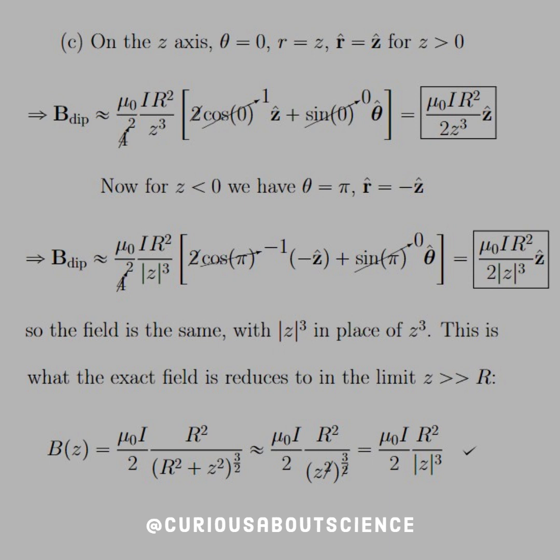Conversely for z less than 0 we have theta equal to pi and R hat equal to negative z hat. So we also know that z will be negative in this region clearly because z is less than 0 so we just put a magnitude sign.